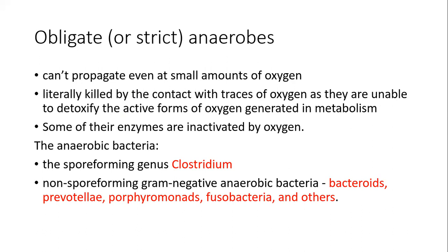Anaerobic bacteria include clostridium — spore-forming — and non-spore-forming gram-negative anaerobic bacteria. They can live in the human organism as part of normal microbiota. For example, bacteroides is a normal part of the microbiota of the gastrointestinal tract. But in some cases, they can cause wound anaerobic infection. For example, bacteroides can cause abscesses.